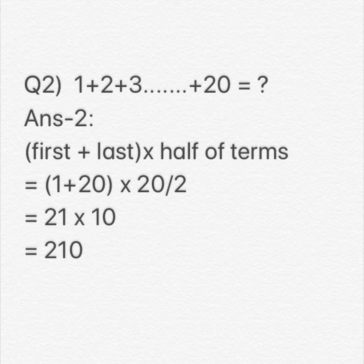is 20 by 2, half of 20. Let's proceed: 1 plus 20 is 21, and half of that 20, meaning 20 by 2, is 10. 21 into 10 is 210. Without consuming much time, we can do this. So this is how the sum of first 20 natural numbers could be found. Thank you.